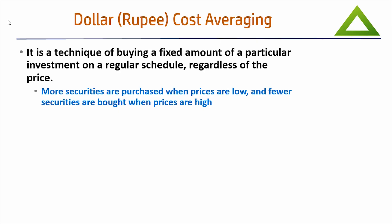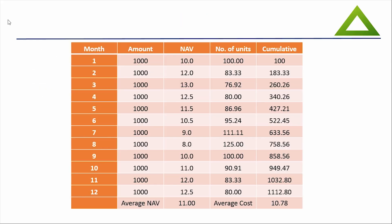It is a technique of buying a fixed amount of a particular investment on a regular schedule regardless of price. More securities are purchased when prices are low and fewer securities are bought when prices are high. We have read this in newspapers, articles, and magazines — invest in good times of market, invest in bad times of market, so you average out. It is a passive strategy of investing wherein, irrespective of the state of the market, you keep investing, and if you follow the entire market cycle with this methodology, it does wonders.